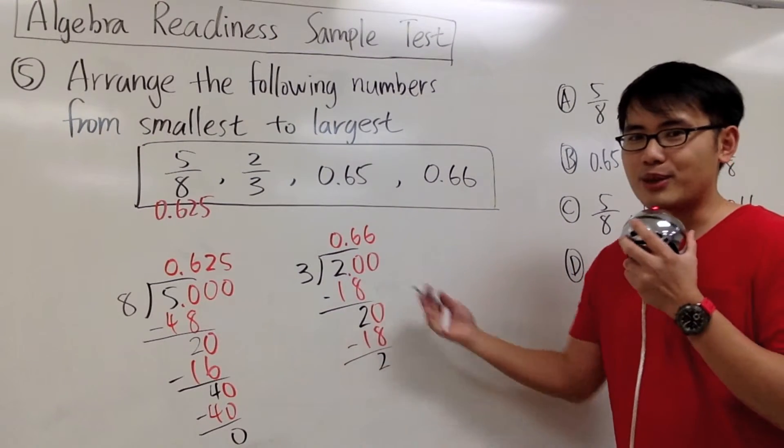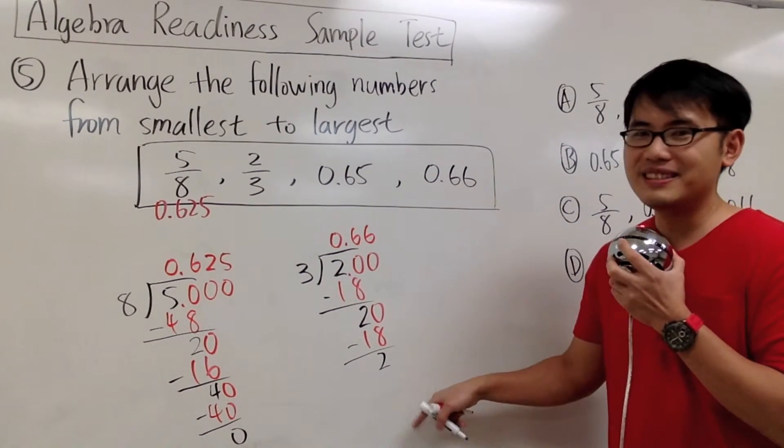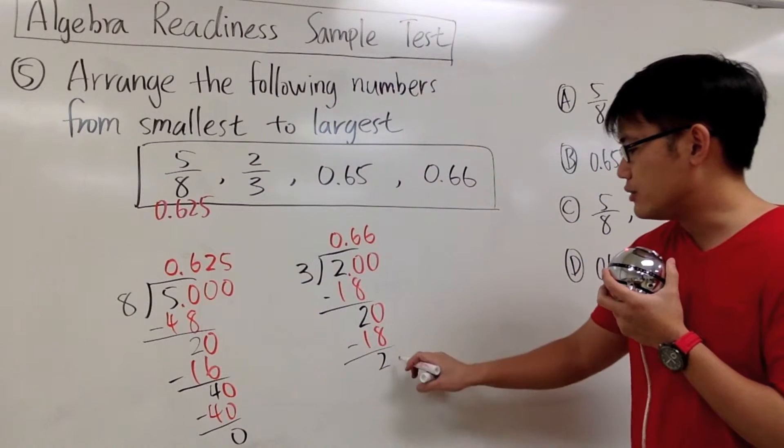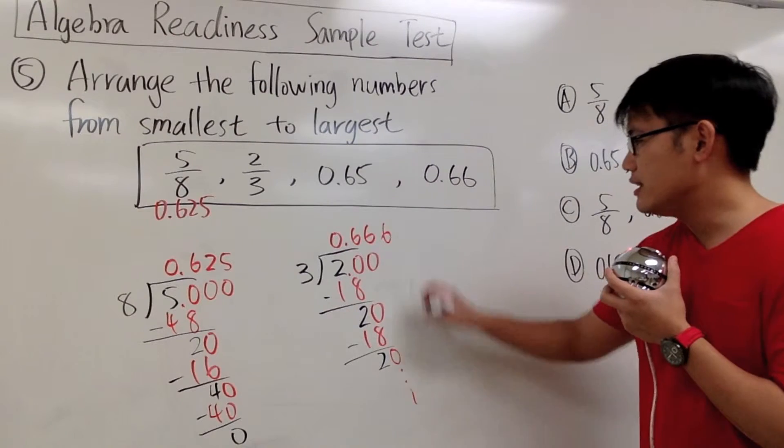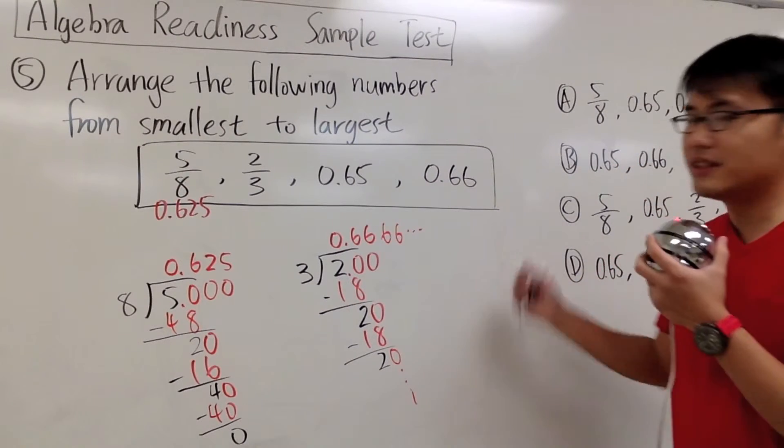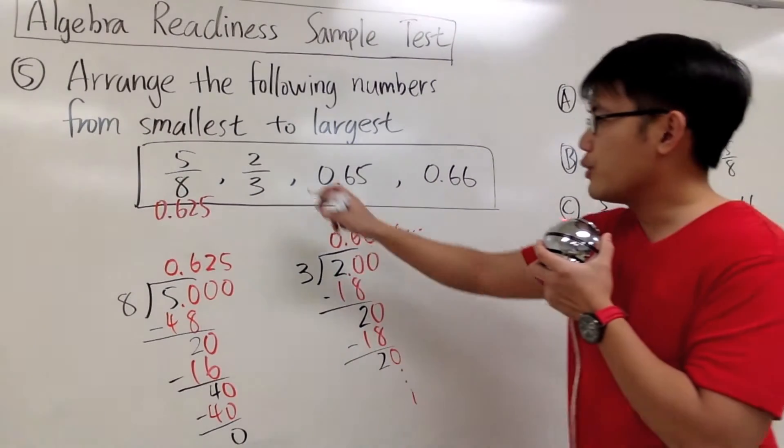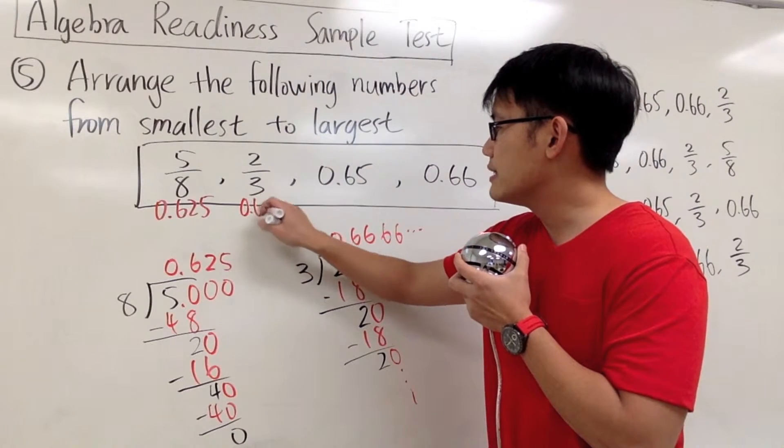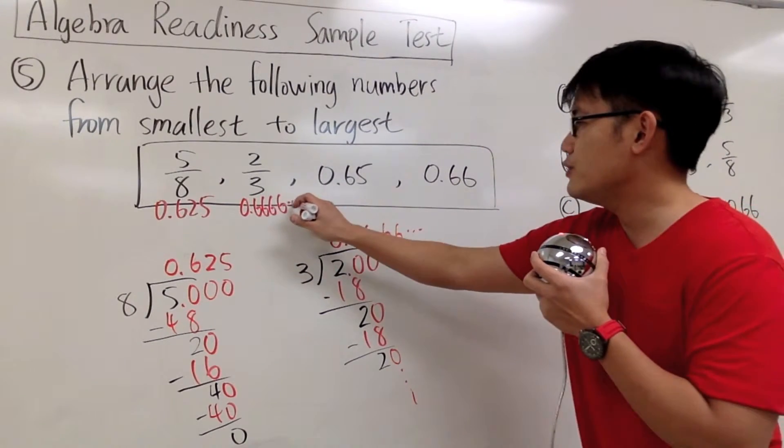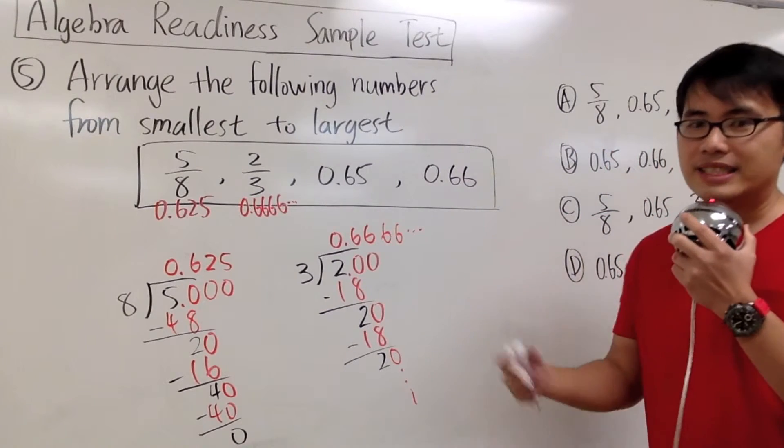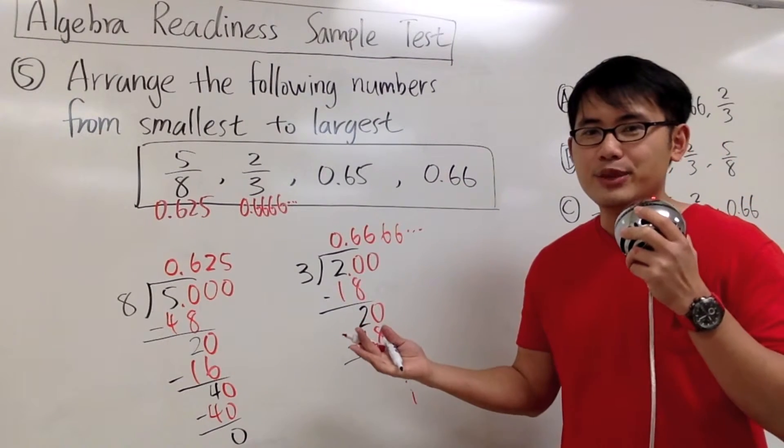And it actually keeps on going forever because it's always a 2. So you can attach the 0 right here. And you have another 6. And this will never end. So you have a bunch of 6. So I'm just going to indicate this as 0.6666 and so on. I can never finish this up. I can put da da da. And sometimes you can put a bar. But it doesn't really matter in this case.